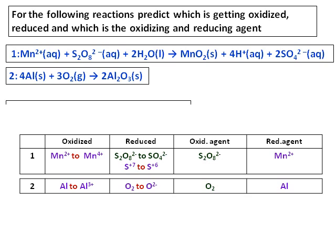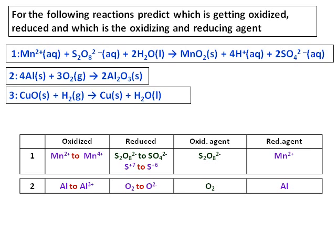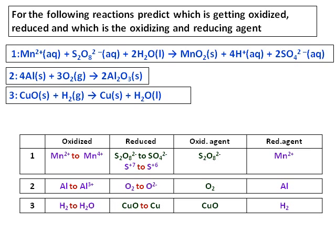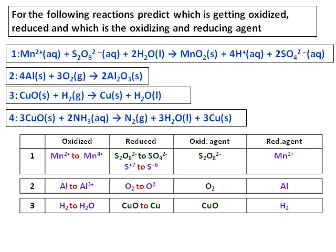And for the third case, hydrogen is getting converted into water. The oxidation state 0 is getting converted into positive 1. Therefore, it loses electron and therefore it is oxidation. And copper oxide to copper, the oxidation state changes from +2 to 0. And therefore, this is reduction. Copper oxide is the oxidizing agent and hydrogen is the reducing agent.